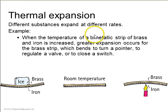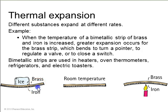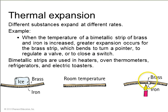Different substances expand at different rates, and this is used in bimetallic strips. If you have a bimetallic strip of brass right against iron, it turns out there's a greater thermal expansion for brass than for iron. If you cool a bimetallic strip, the brass will contract more than the iron and it will bend up towards the ice. At room temperature the strip might be straight; if you heat it, the brass will expand more than the iron and bend it the other direction. So bimetallic strips bend different amounts depending on temperature, and that can make a thermometer or something that turns a heater or electric toaster on and off by making an electrical connection based on temperature.